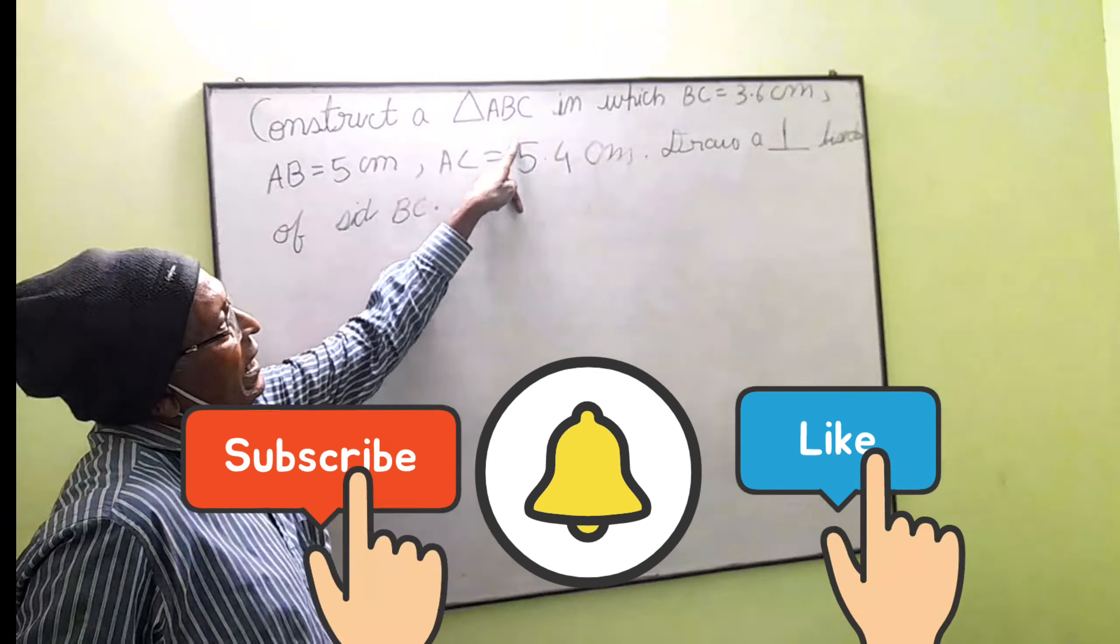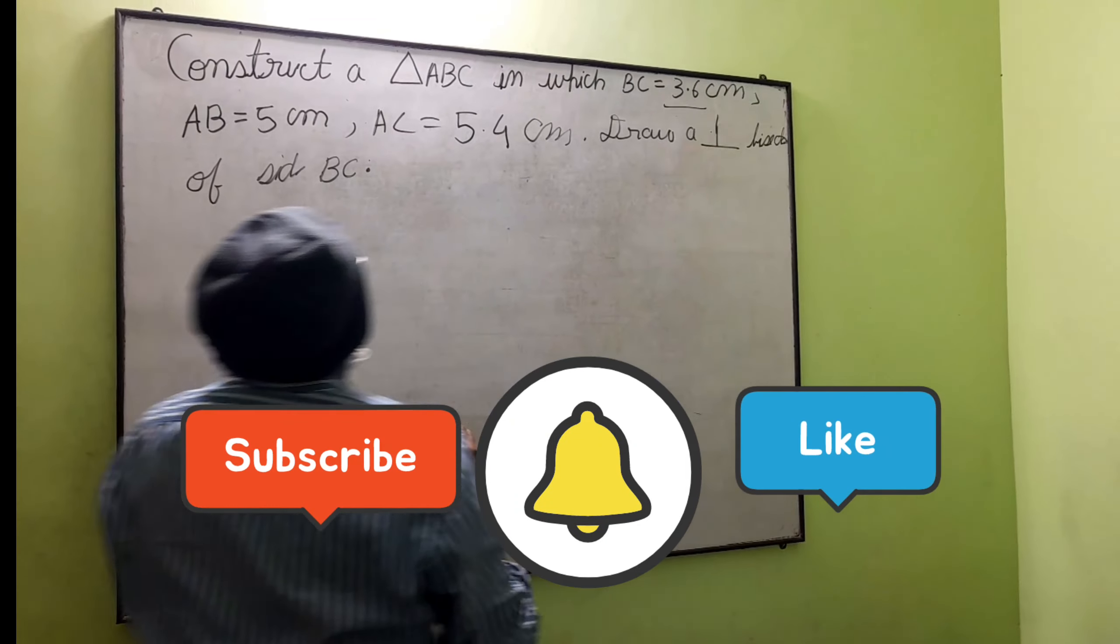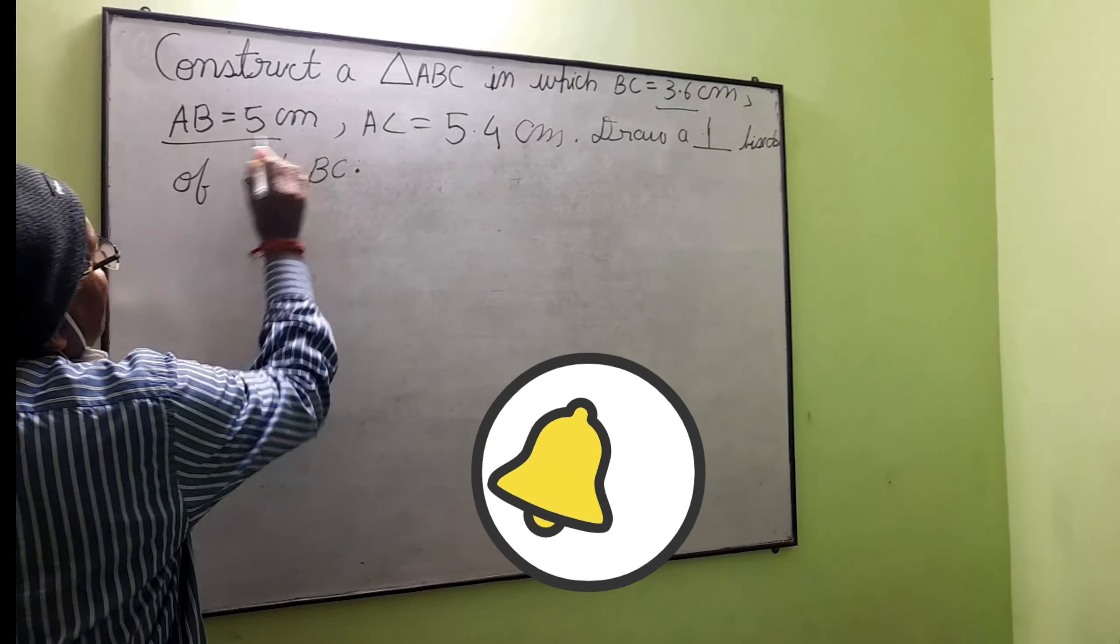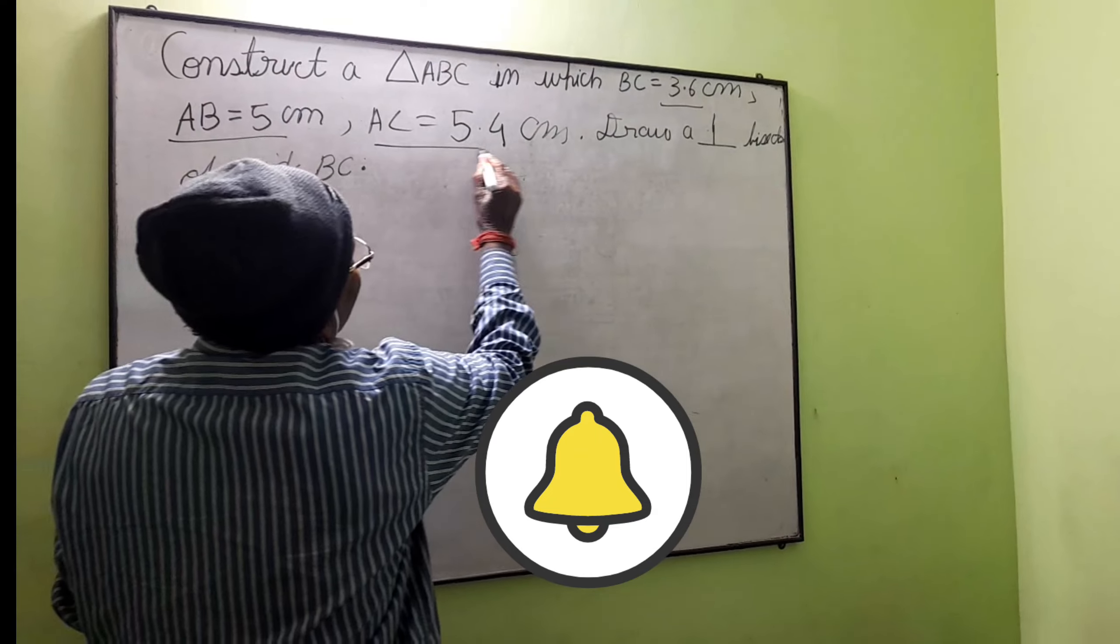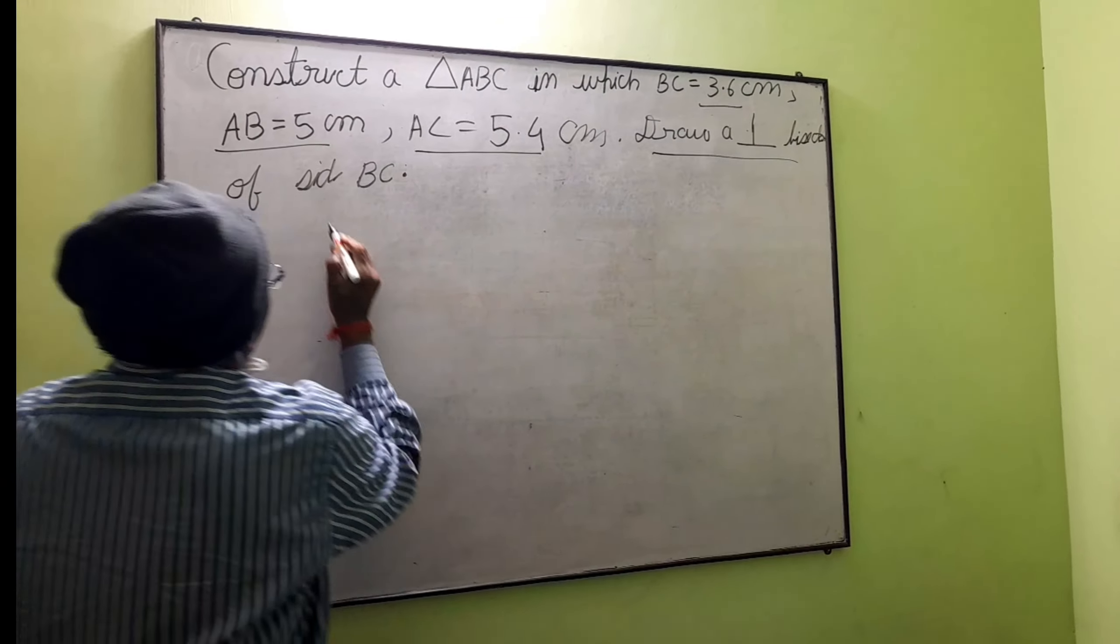Construct a triangle ABC in which BC is equal to 3.6 centimeters, AB is equal to 5 centimeters, and AC is equal to 5.4 centimeters, and draw a perpendicular bisector of BC.